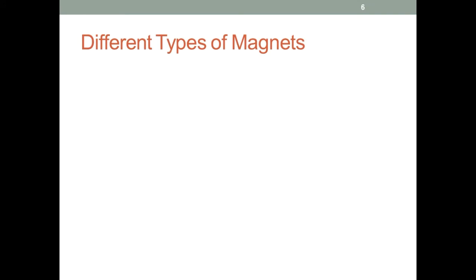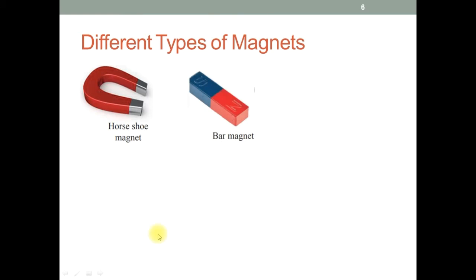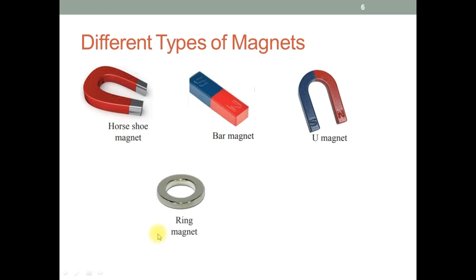Different types of magnets. Magnets differ from each other due to their shapes. Examples are Horseshoe Magnet, Bar Magnet, U Magnet, Ring Magnet, and Tabula Magnet. They are used for different purposes.